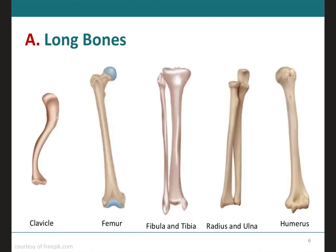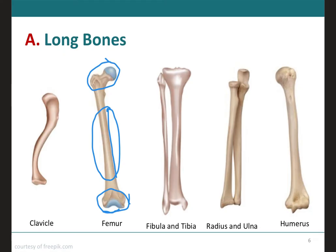Long bones have greater length than width and consist of a diaphysis, which is the shaft, and usually two epiphyses, one on each end. As you can see from the image, especially when observing the clavicle, these long bones are slightly curved, and so are all other long bones, even if it's not very noticeable. This slight curvature is important for strength, as a curved bone absorbs the stress of the body's weight at several points so that it is evenly distributed. If these bones were straight, weight would be unevenly distributed and the bone would fracture easily.